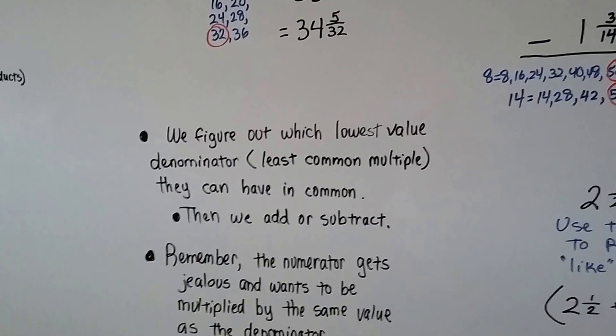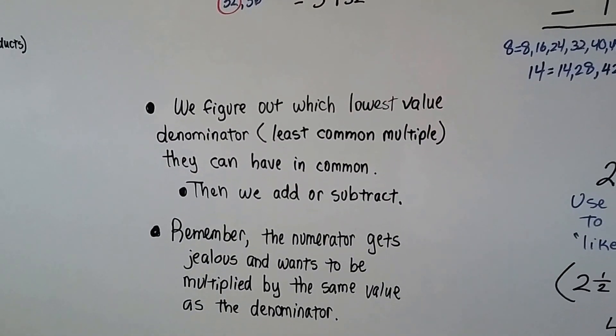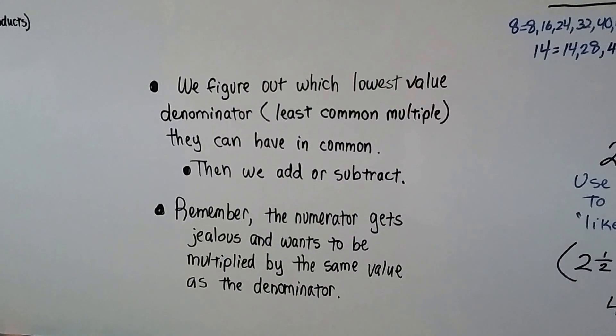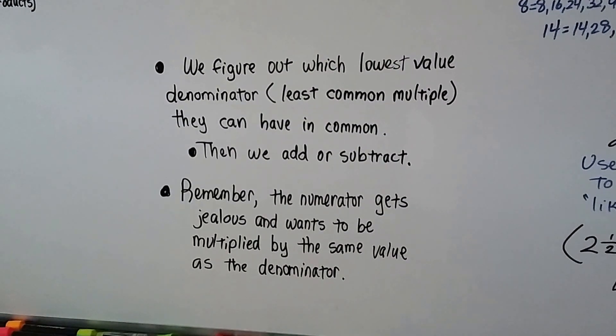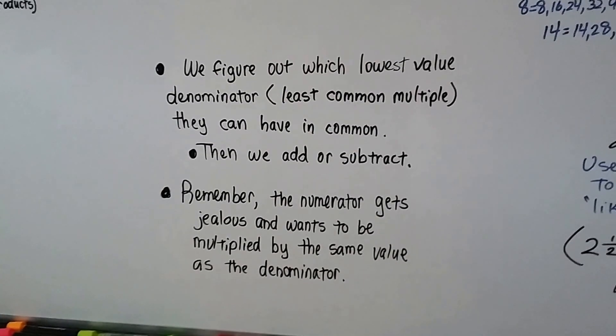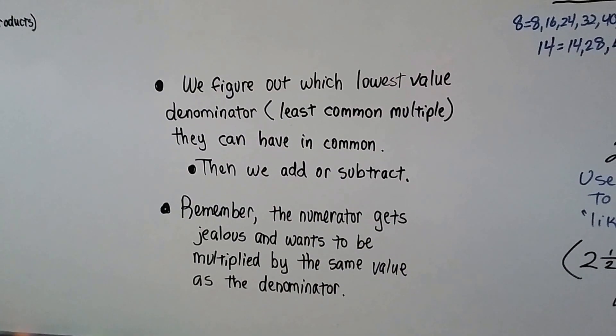We just figure out which lowest value denominator, which least common multiple they can have in common. And then we add or subtract. But remember, the numerator gets jealous and wants to be multiplied by that same value that we multiplied the denominator.